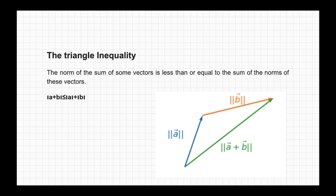The third property is that norms follow the triangle inequality. It states that the norm of the sum of some vectors is less than or equal to the sum of the norms of those individual vectors, as seen in the equation: norm of (a + b) ≤ norm of a + norm of b. This is represented by the diagram as well.